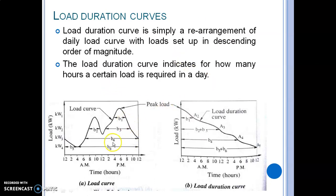In the load duration curve, the peak loading condition is plotted first — the peak load is plotted at time zero on the load duration curve. The load at an ordinary kilowatt level, where the intercept is b1 on the load curve, is plotted at time b1 on the load duration curve. The base of the load duration curve represents the total time span.